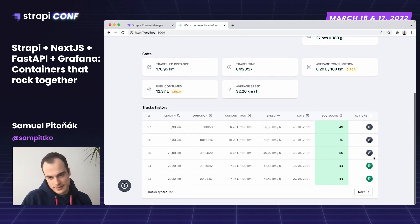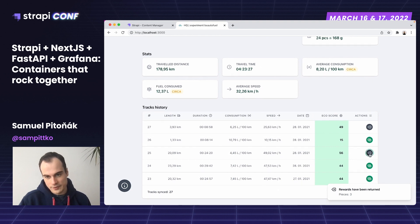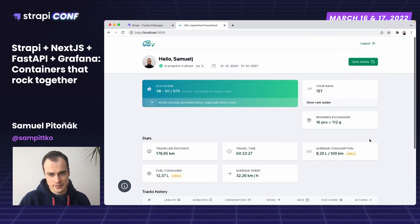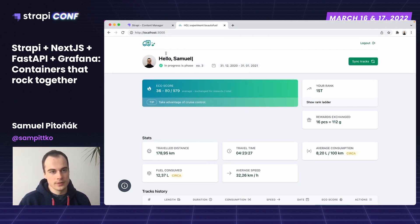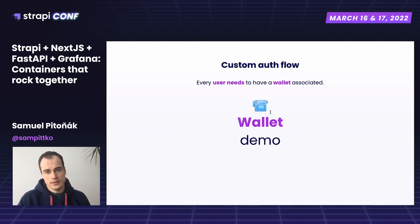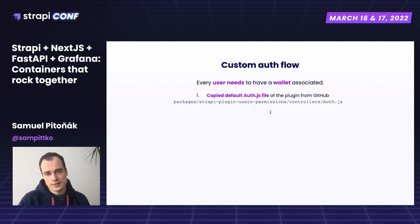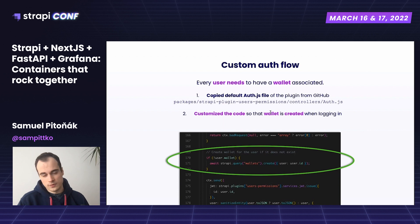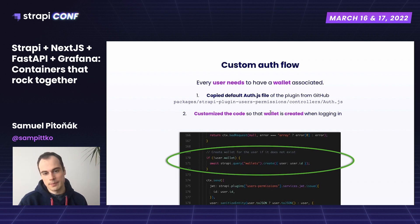In the system there is a possibility to make purchases for rewards, and these rewards can be purchased using a wallet associated with the account. To associate the wallet, I needed to customize the authentication flow, and that was very easy. You copy the default controller file of the users-permissions plugin from GitHub, then add your code to fit your desired business logic. Once the user logs in for the first time, a wallet is created and can be instantly manipulated.